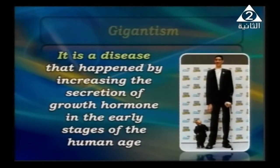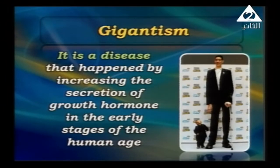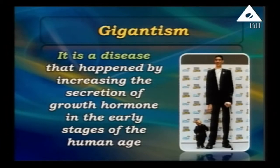The opposite of dwarfism is gigantism — a disease caused by increasing the secretion of growth hormone, resulting in an abnormally large body height. Looking at a picture, we can see gigantism on one side and dwarfism on the other. Both are diseases caused by abnormal hormone secretion — too little growth hormone causes dwarfism, and too much causes gigantism, both occurring in the early stage of human age.